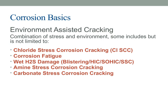This is especially relevant in dynamic applications like pipelines or machinery. Wet H2S damage involves various forms of deterioration, including blistering, hydrogen-induced cracking, SOHIC, and sulfide stress cracking — issues common in oil and gas environments that can be quite severe. We also need to consider amine stress corrosion cracking, which can occur in chemical processing plants where amine solutions are used, and carbonate stress corrosion cracking, often seen in carbonate environments. All these forms highlight how different environments, when combined with stress, can significantly impact the integrity of materials.